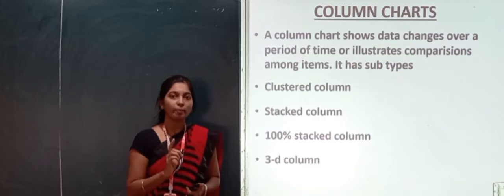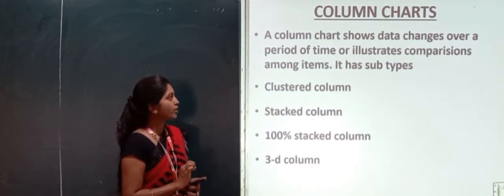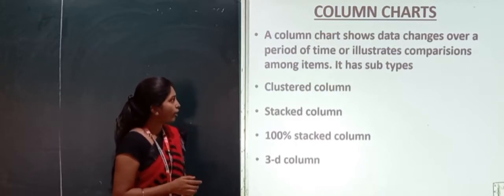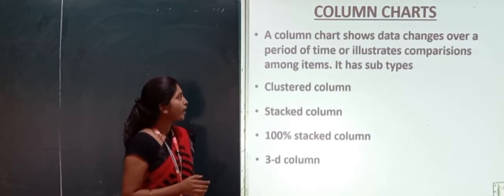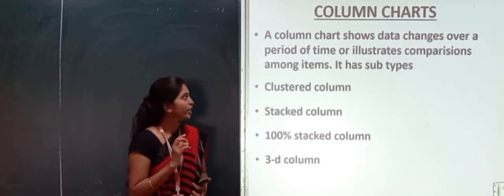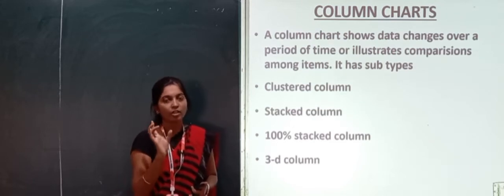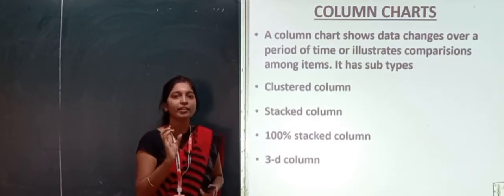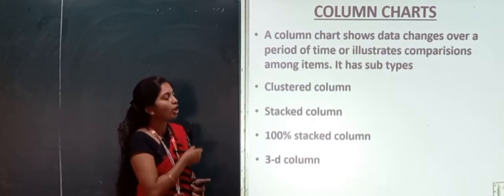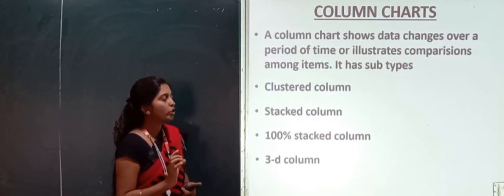The first one is column chart. So, a column chart shows data changes over a period of time. Or, it illustrates comparison among items. Column chart is one of the chart which shows the data comparison or data illustration. It shows the comparison in a chart wise, column wise. This is what we call column chart.